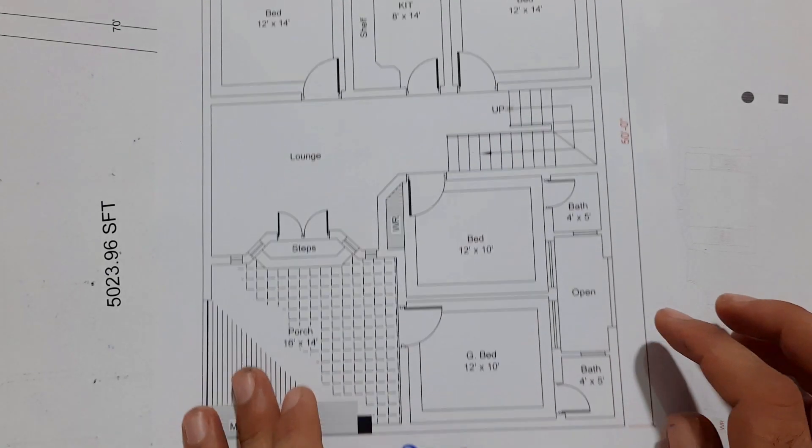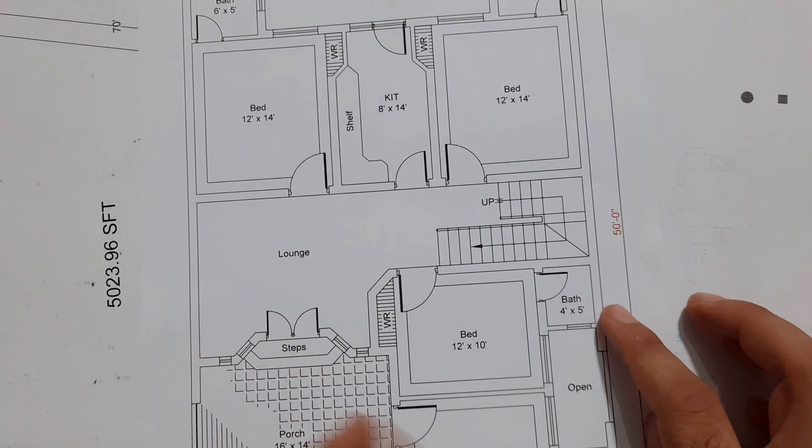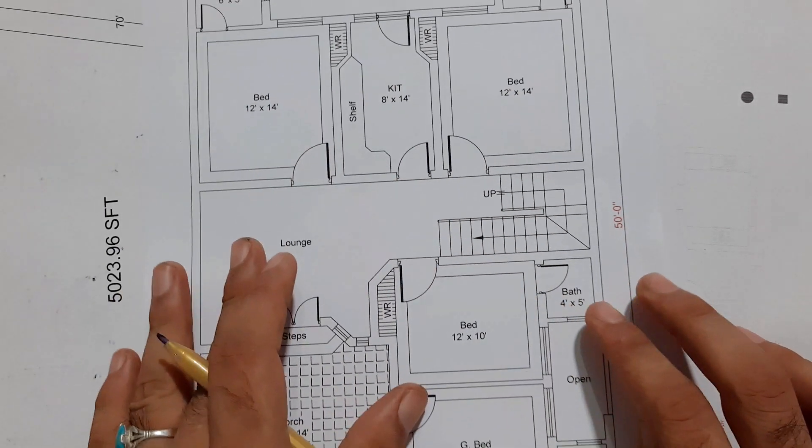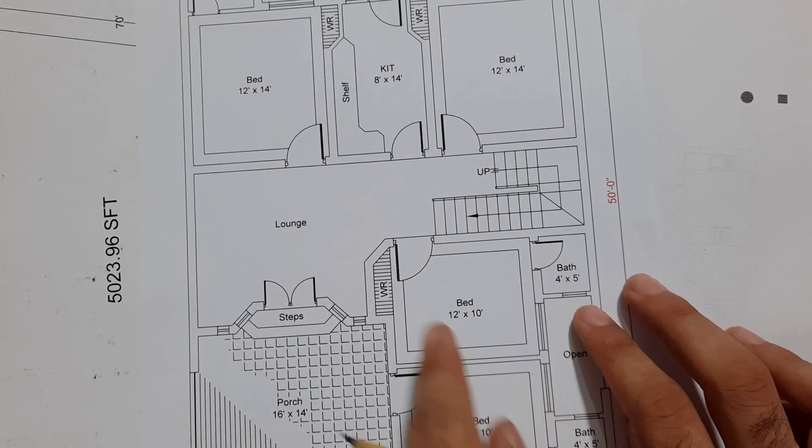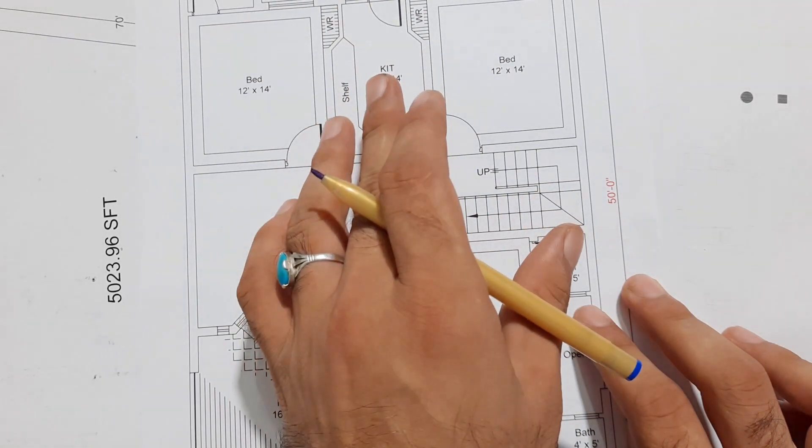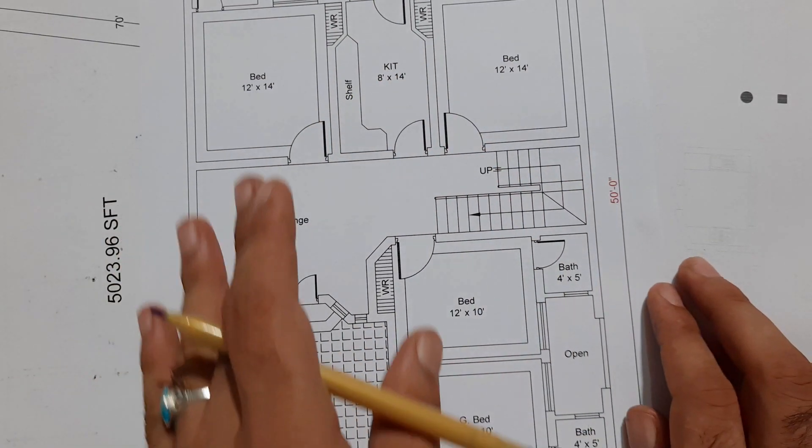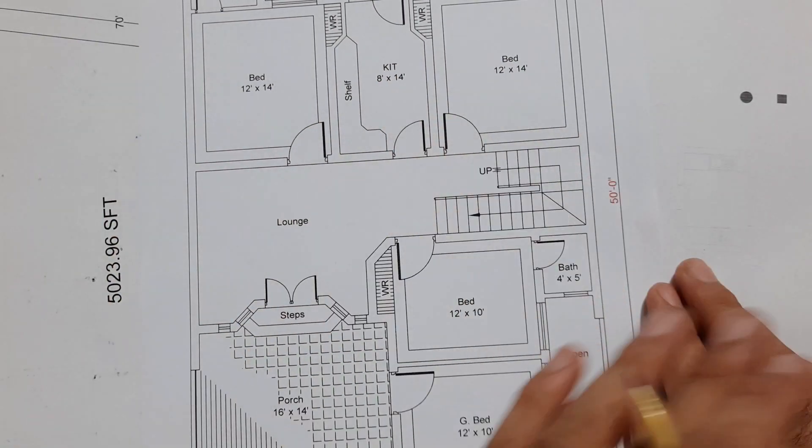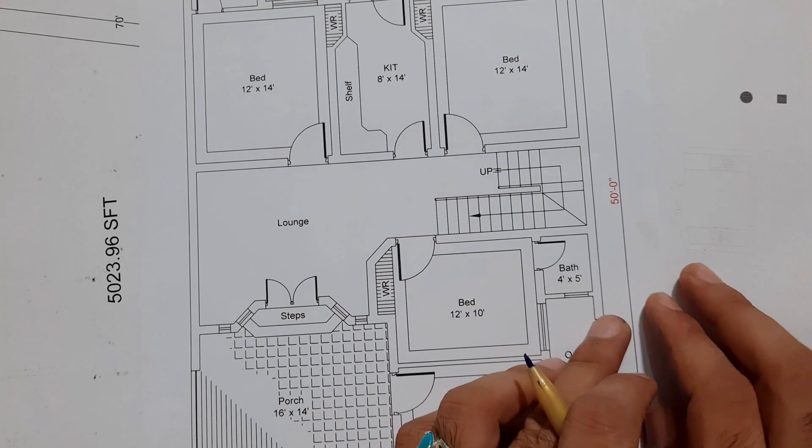Here we have three bedrooms, one guest bed, TV lounge, staircase, open sky, attached bath - everything is here, kitchen, etc. So let's start.